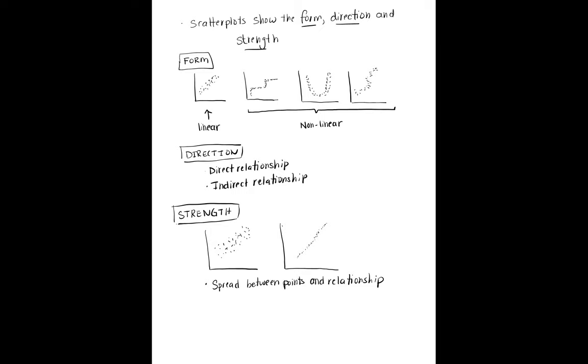So when we speak and use the word form in Econ 2040, what we mean is whether the relationship is linear, a straight line, or whether it's nonlinear.